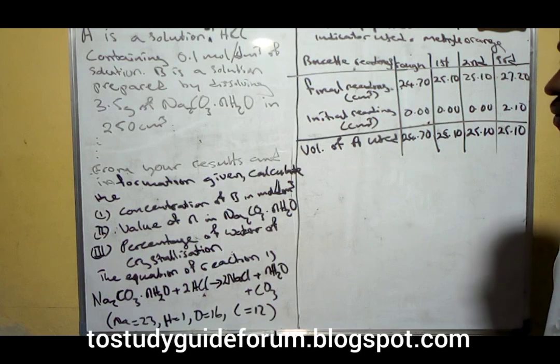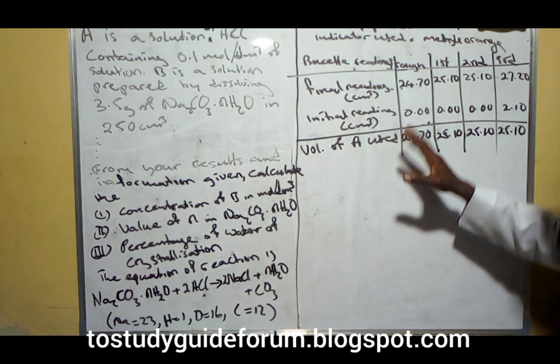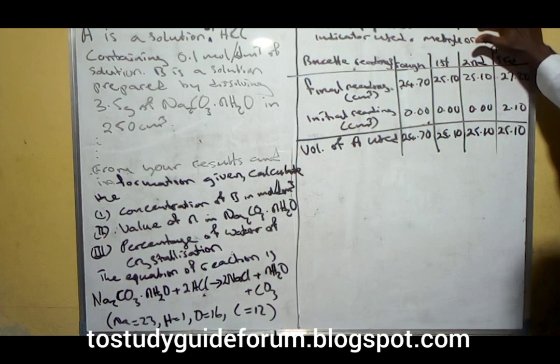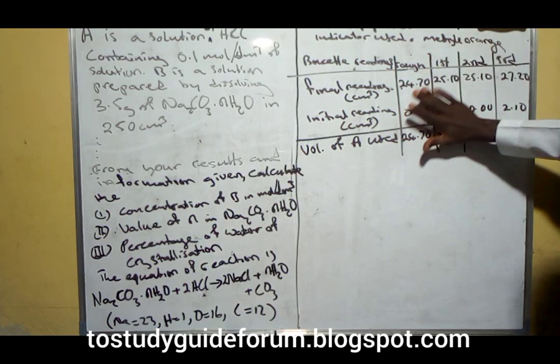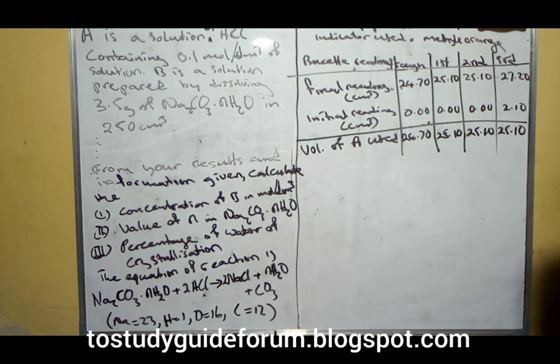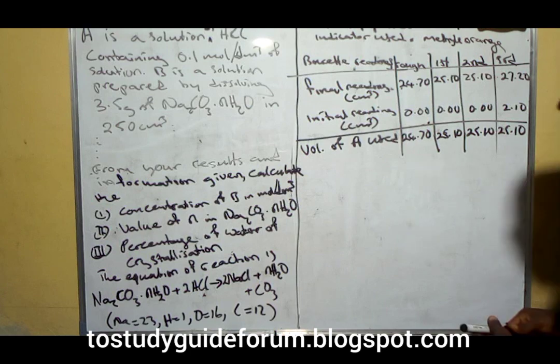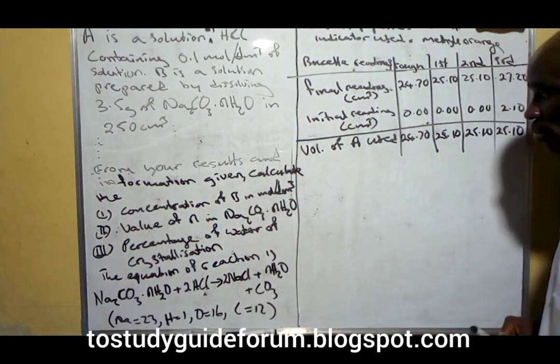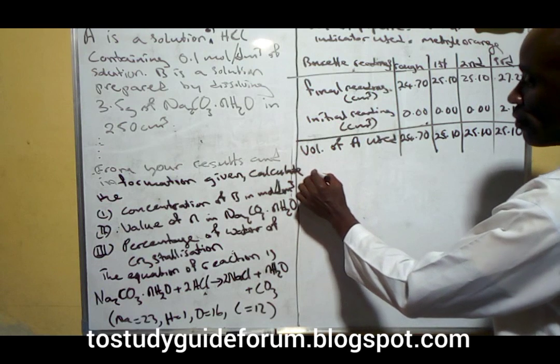The outcome of the titration is what we have here. From here we find that everything seems to be consistent. The first thing we do is calculate the average volume of A used.